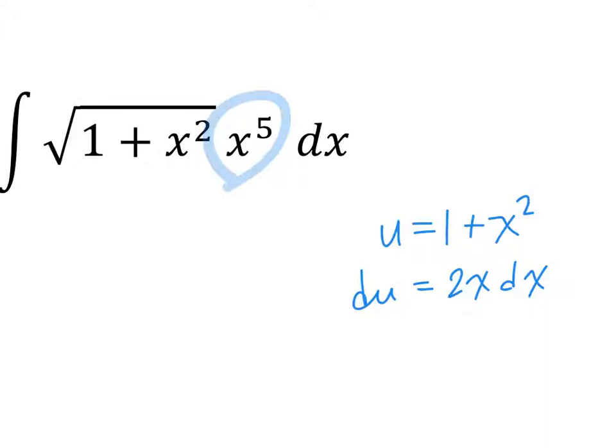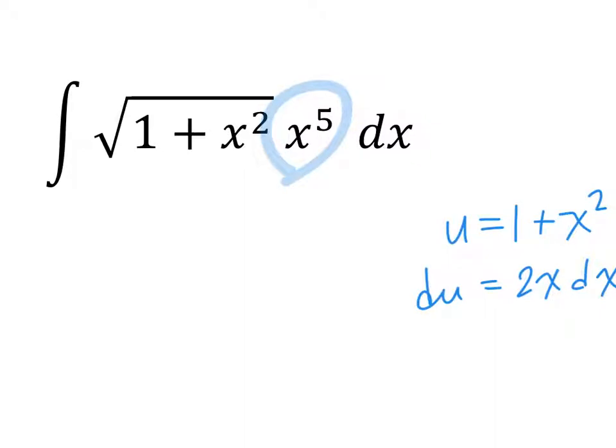All right, let's do du. Du is 2x dx. I need to copy those. All right, du is 2x dx. Well, does that look anything like x to the fifth? No. No, not at all. So what do we do? Well, this is a tricky question. We are going to change this a little bit.